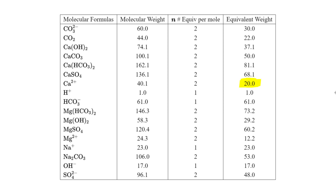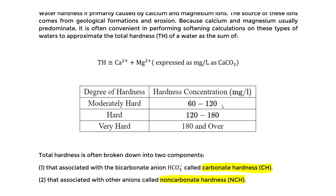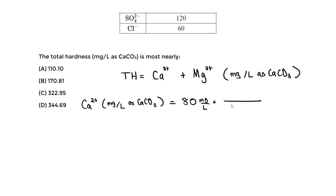Since I'm in the same table, I'll also find the magnesium equivalent weight, which is 12.2. For calcium: 80 mg/L × (50 / 20) = 200 mg per liter as calcium carbonate. The equivalent weight of calcium carbonate on top is always 50, and the equivalent weight of calcium on the bottom is 20.